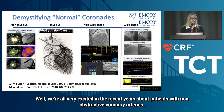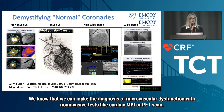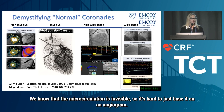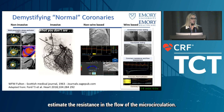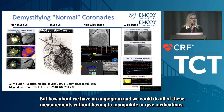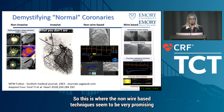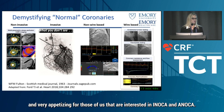We're all very excited in recent years about patients with non-obstructive coronary arteries. We know we can make the diagnosis of microvascular dysfunction with non-invasive tests like cardiac MRI or PET scan. The microcirculation is invisible, so it's hard to base it on an angiogram. We've also been using Doppler and thermodilution invasive techniques with adenosine to directly estimate resistance and flow in the microcirculation. But what if we could do all these measurements from an angiogram without manipulating or giving medications? This is where non-wire-based techniques seem very promising for those interested in INOCA and ANOCA.